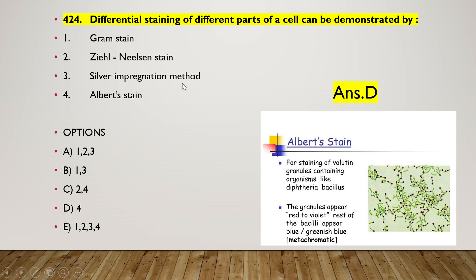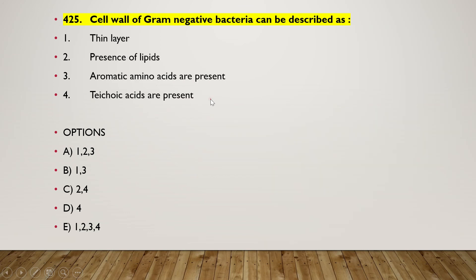The last question: cell wall of Gram-negative bacteria can be described as — (1) thin layer, (2) presence of lipids, (3) aromatic amino acids are present, (4) teichoic acid are present. The right answer is option A — one, two, and three is the correct answer. These are all 25 questions of this series. Thank you for watching this video.